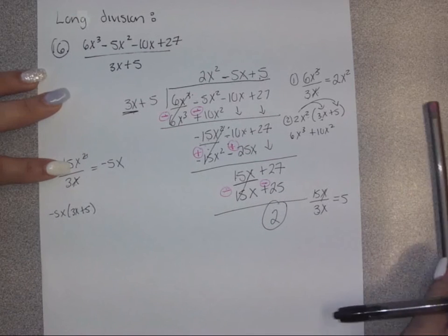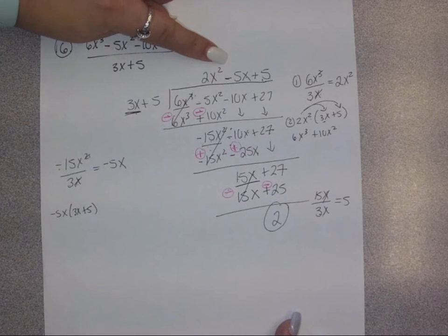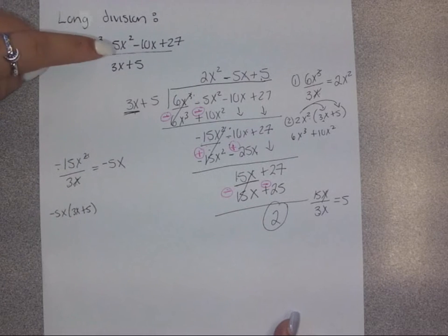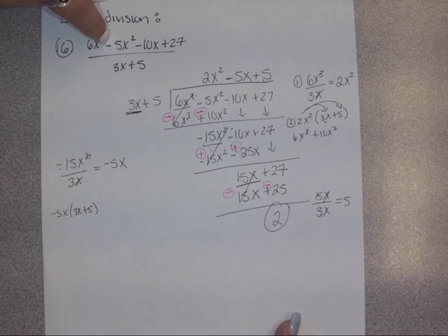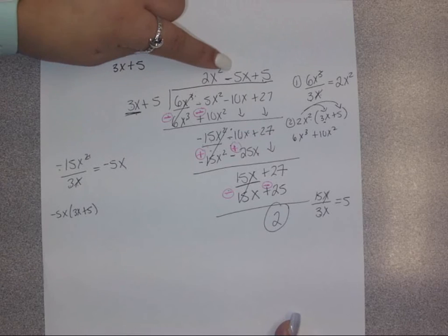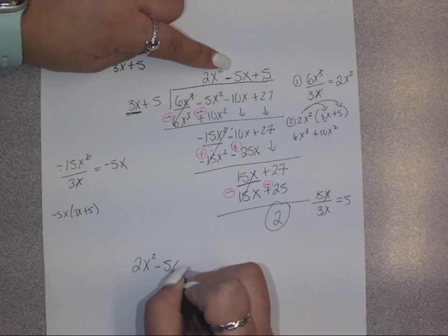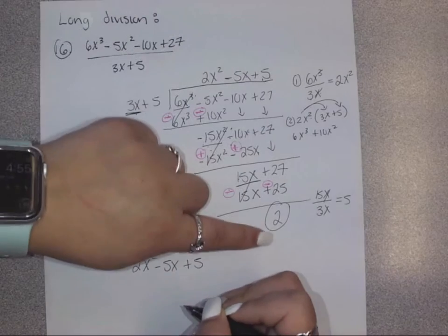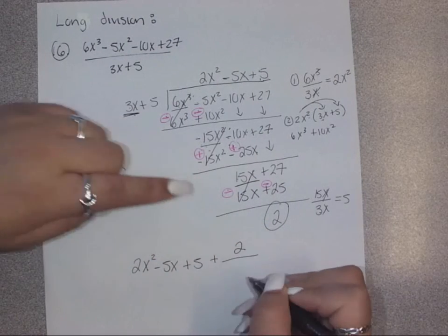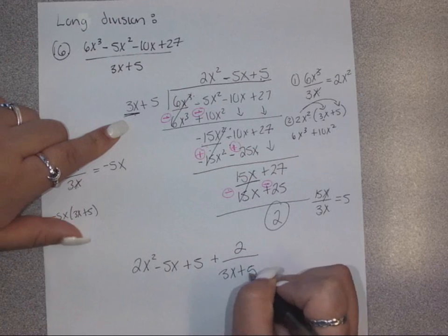So how do we write the solution? You take your quotient — 3x plus 5 goes into 6x cubed minus 5x squared minus 10x plus 27 a total of 2x squared minus 5x plus 5 times. Since there's a remainder, you take the remainder and put it over your divisor. So the final answer is 2x squared minus 5x plus 5 plus 2 over (3x plus 5).